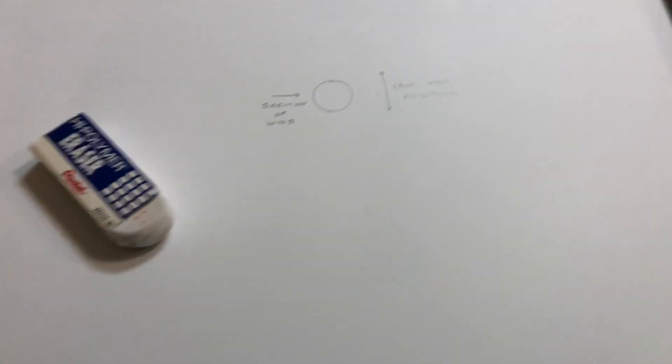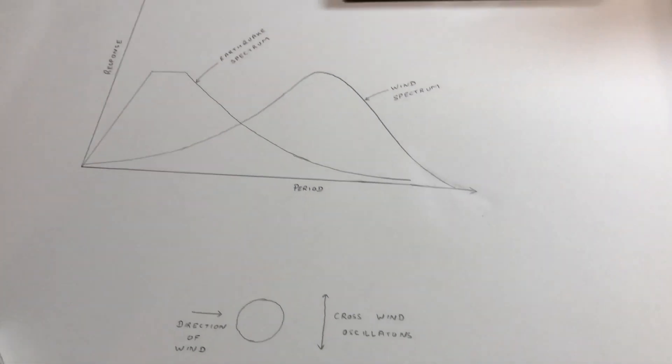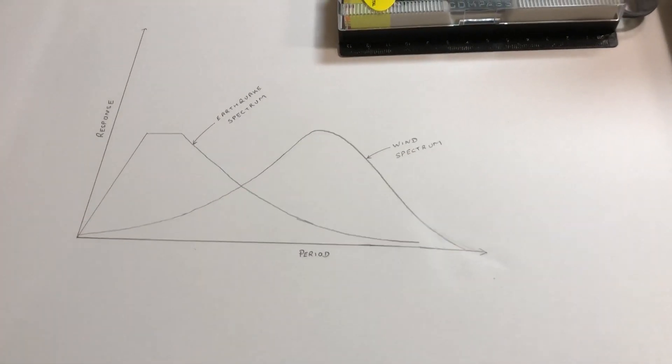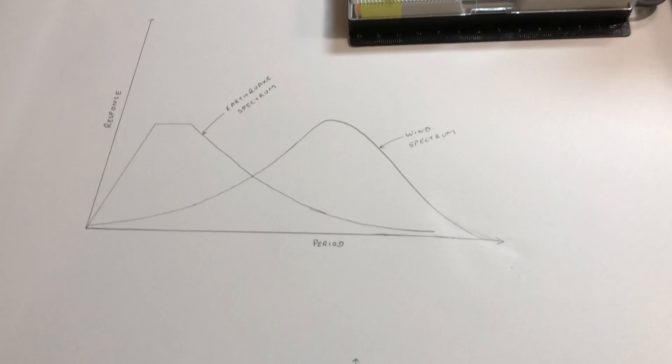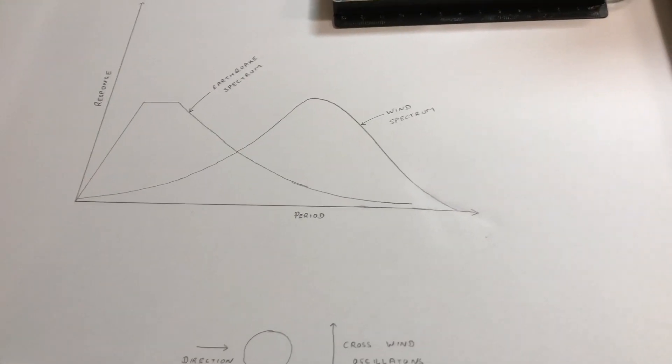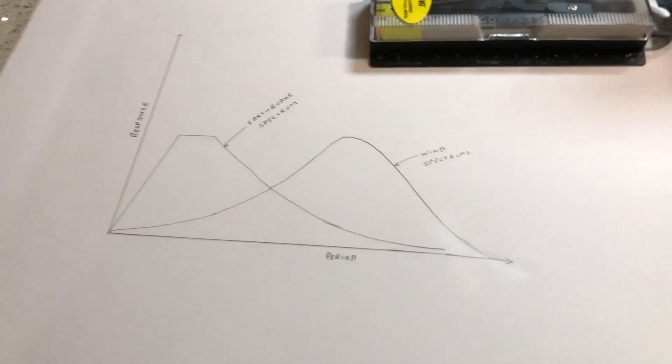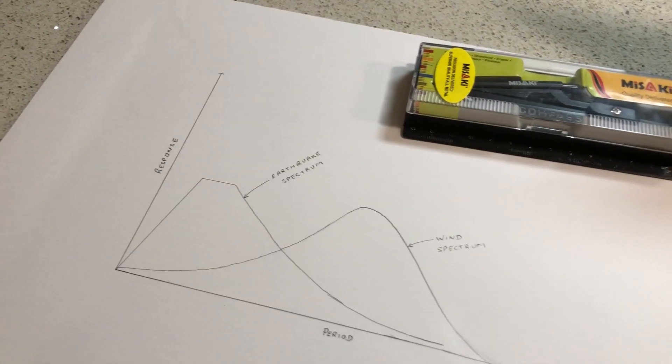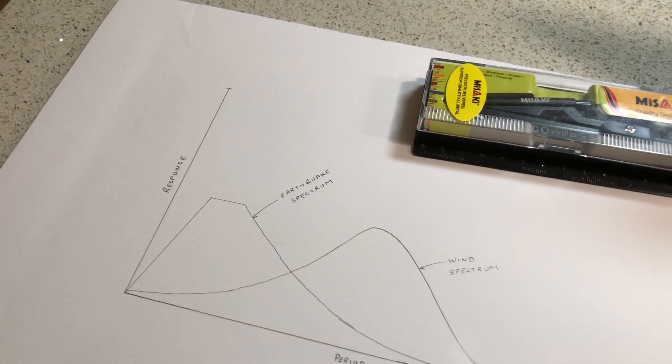People generally provide dampers at the top of the building. What a damper does is it provides additional damping to the structure, so it kind of opposes the oscillation of the building itself. It is passive damping, so it always helps structures resist the wind vibrations.